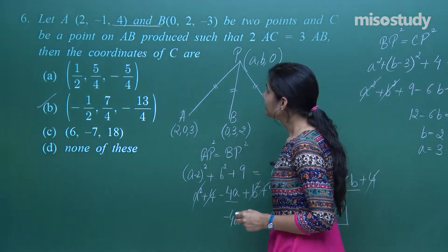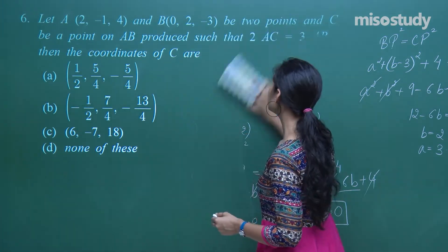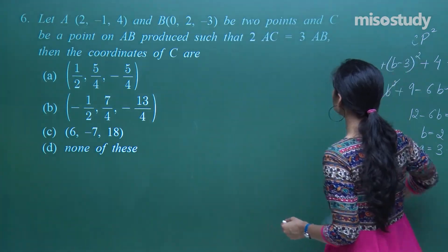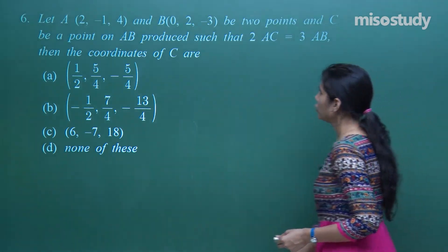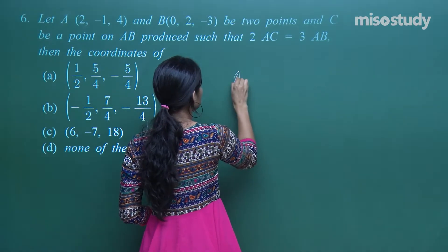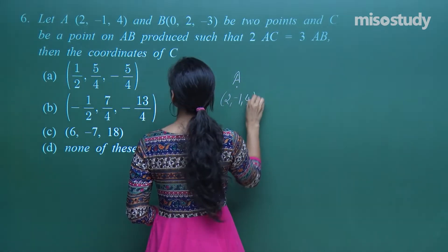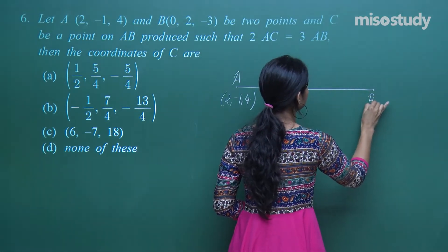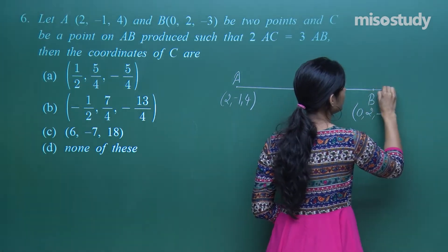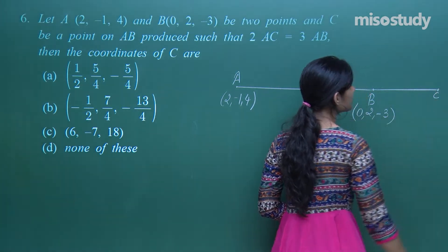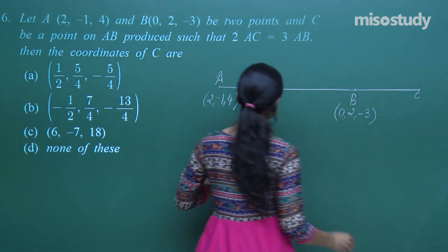The next question: Let A = (2, −1, 4) and B = (0, 2, −3). Point C lies on AB produced such that twice AC equals thrice AB. Find the coordinates of C.